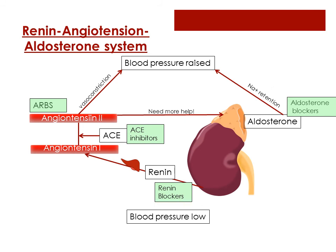Here's a quick look back at the renin-angiotensin-aldosterone system and the medications that interfere with it. There are renin blockers — not very common yet, but aliskiren or Tekturna is one of them. ACE inhibitors block the conversion of angiotensin 1 to angiotensin 2. ARBs keep angiotensin 2 from causing vasoconstriction by blocking the receptors. And there are the aldosterone blockers, like aldactone.